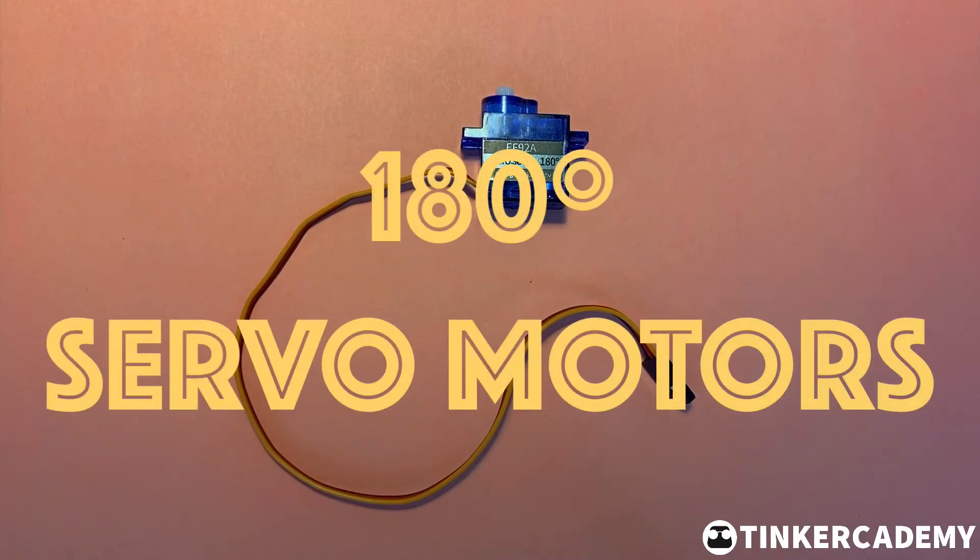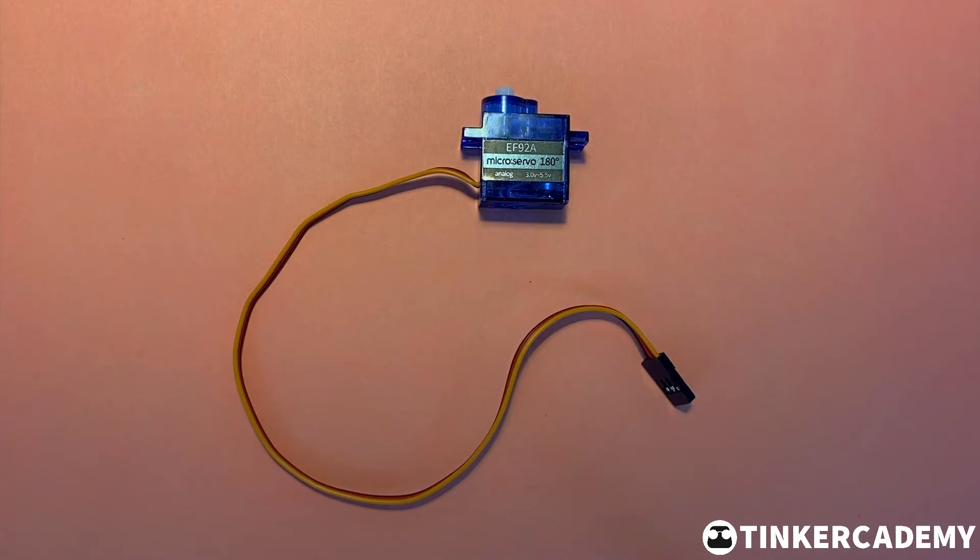A servo motor is a small DC motor packaged with gears and circuitry that allows for more precise control over the motor's rotation. One advantage of using a servo motor is that it needs very little current, so the micro bit can drive it directly.